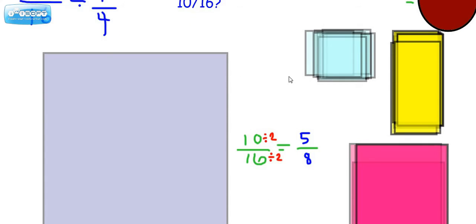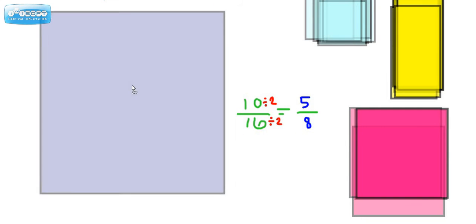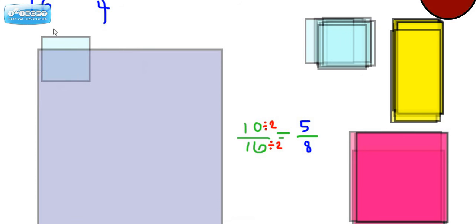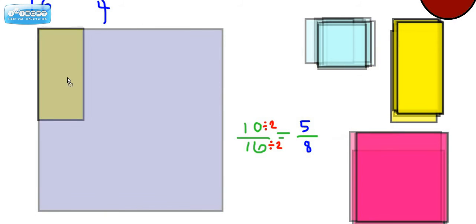So first of all, let's understand what my little bank of boxes would be. This purple square represents 1. These would represent 16ths because you would need 16 of them to make up the whole. Okay, so blue is 16ths. This would be 8ths. Do you see that you would need 8 of them to make up the whole?